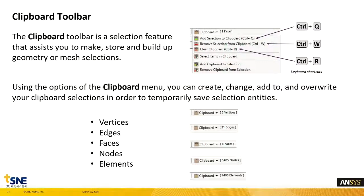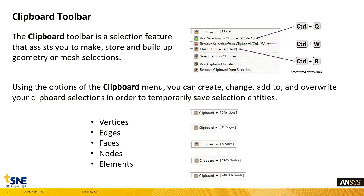Clipboard Toolbar를 드롭다운해서 보시게 되면 현재 선택한 것에 추가하거나, Remove 제거를 하거나, 선택하셨던 개체들을 완전히 지워주는 Clear 작업을 진행하실 수 있습니다. 이와 같은 작업을 GUI로 마우스로 제어하실 수도 있지만, 단축키 기능을 사용해서 빠르게 작업하실 수 있습니다. 선택했던 개체에 추가하는 작업은 Ctrl+Q, 제거하는 작업은 Ctrl+W를 눌러 주시면 됩니다.